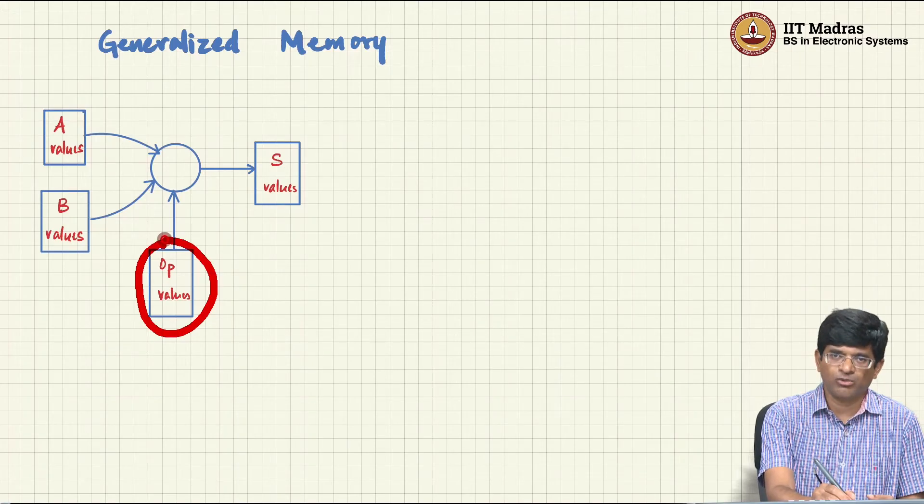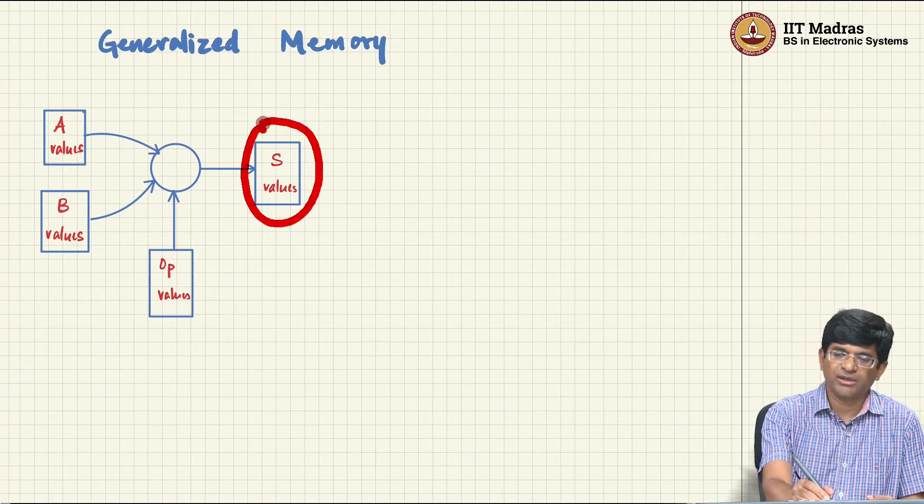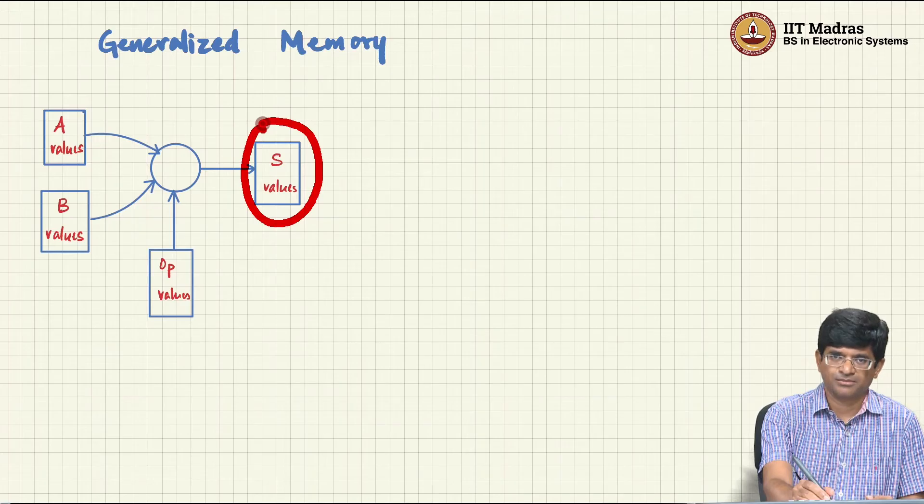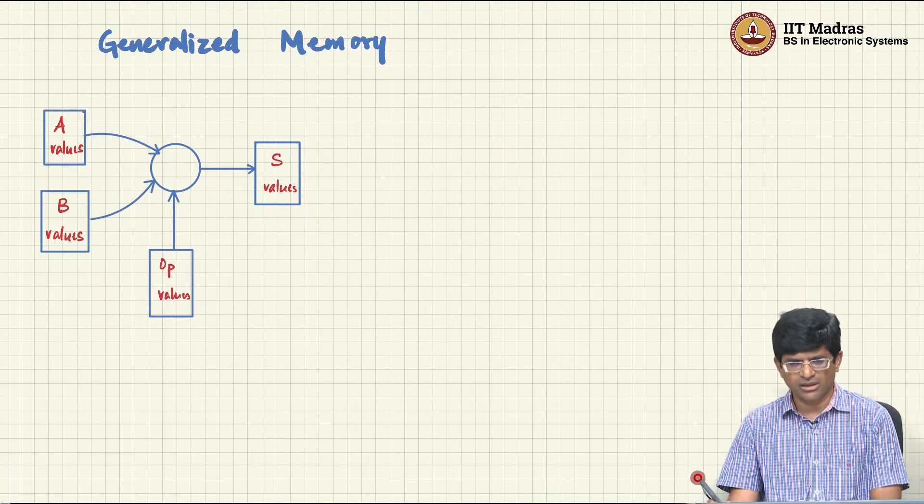The actual instructions or the work that needs to be performed by the ALU is coming from another memory block where I store the OP values. And finally, the result of that goes into yet another memory block that I have labeled S out here.